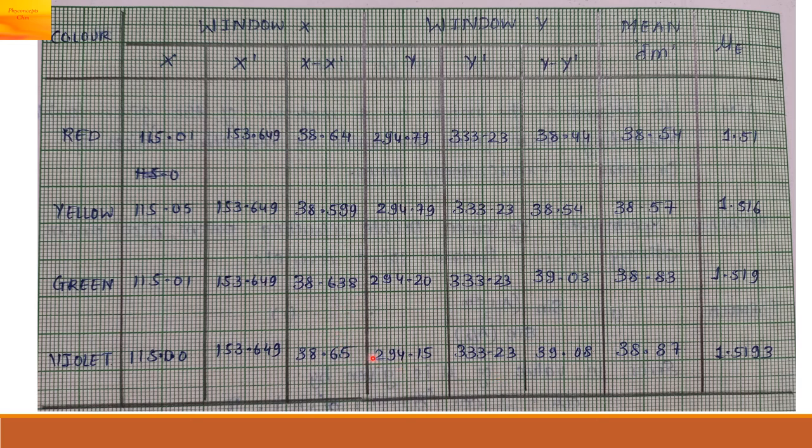This we are doing for these readings. We are taking for the extraordinary spectrum. Then we can take the difference X minus X dash and Y minus Y dash. Then take the mean of this column X minus X dash and Y minus Y dash. Take the mean. You will get delta m.